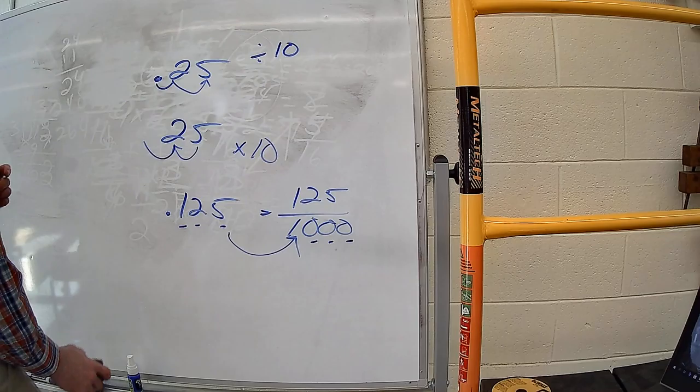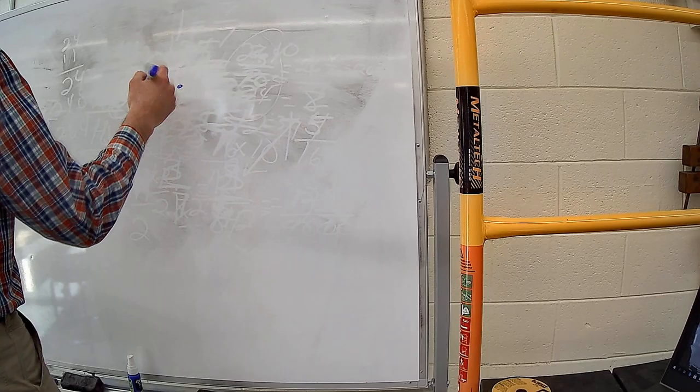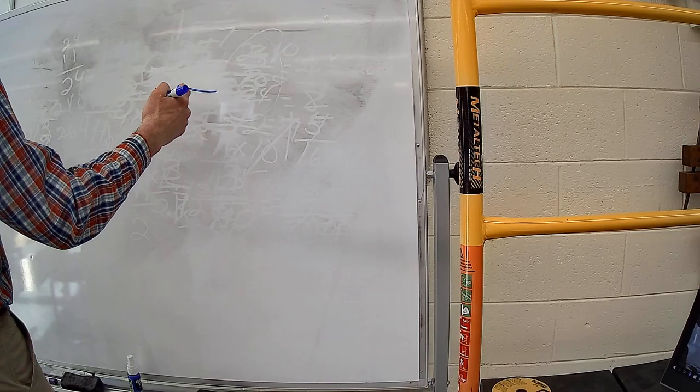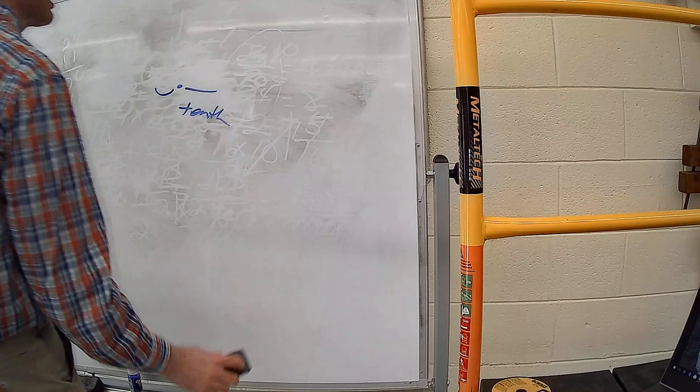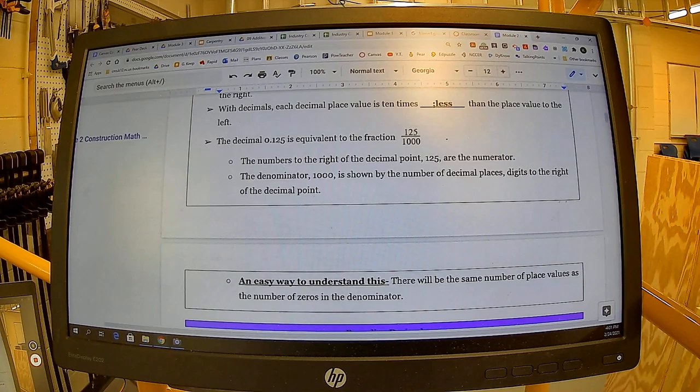Some people get tripped up once you start looking to the right of the decimal place. As we go to the left of the decimal point, the first place value is the ones. But to the right of the decimal point we go straight to the tenths — there's no 'ones' place. I think that kind of messes people up because they start losing track of which place value they're at.